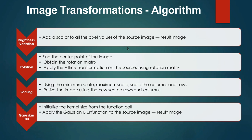For brightness variation, we add a scalar to all pixel values of the source image to get the resultant image. For rotation, we find the center point of the original image, obtain the rotation matrix, and apply the affine transformation. For scale variation, we use the minimum and maximum scale, resize the rows and columns, and obtain the scaled image. For Gaussian blurring, we initialize the kernel size from 1 to 9 and apply the Gaussian blur function to the source image.